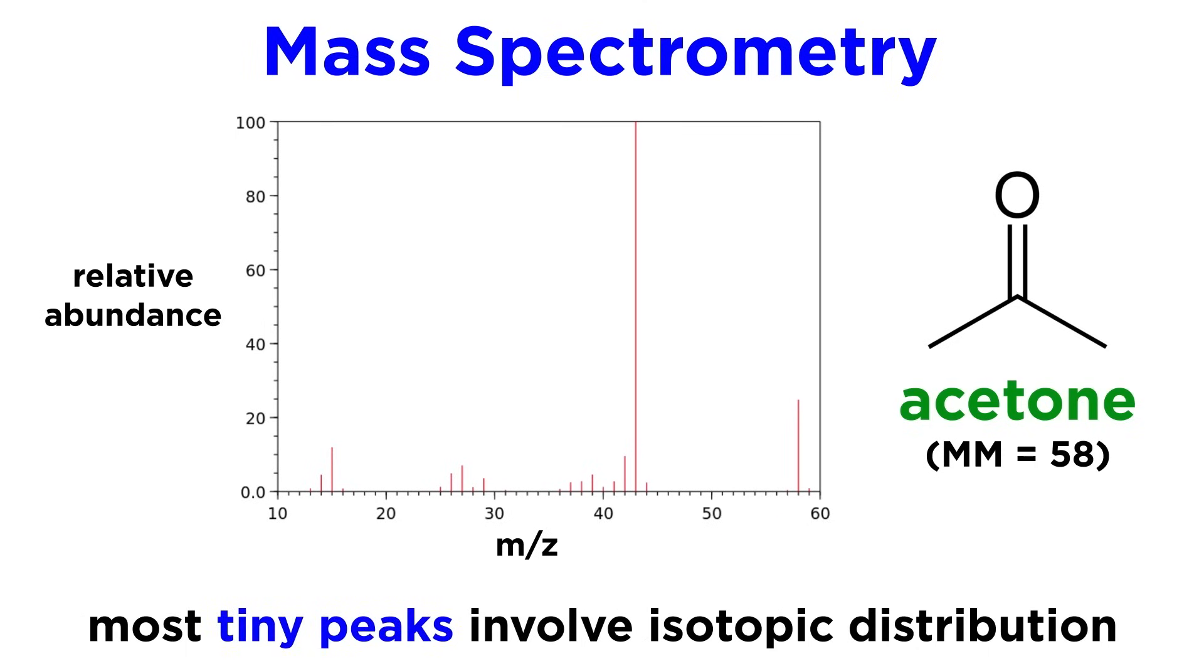Most of the very small peaks found on a mass spectrum are associated with fragments that contain one of the less abundant isotopes of a particular element, so it is good to identify them, but they do not represent the bulk of the relevant information.